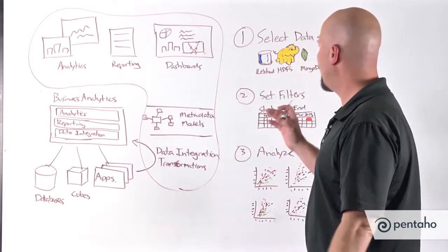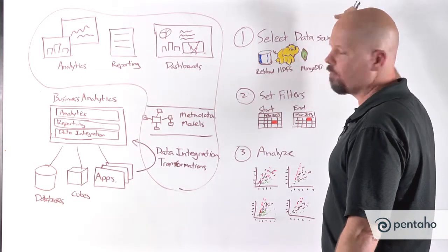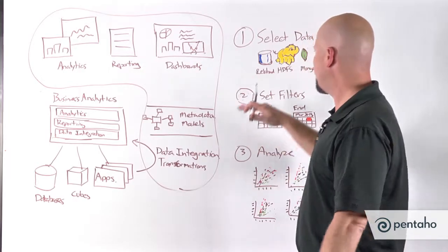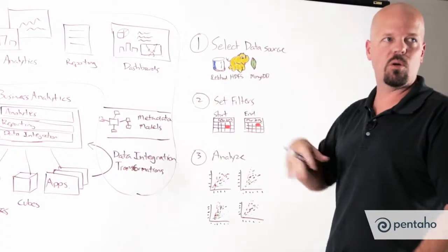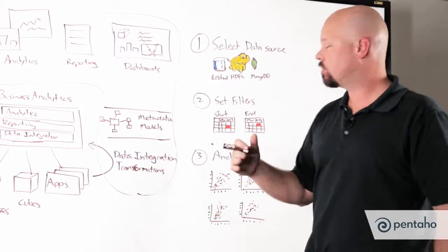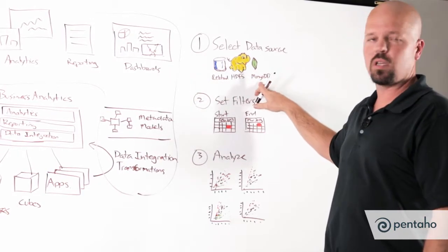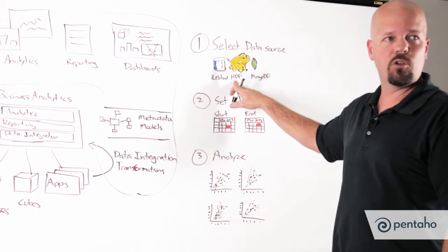And so really we boiled it down into three specific steps. And so the first step of InstaView is point at the data that you want to access. So that might be a traditional data source like relational. That might be a more sophisticated data source like a big data data source, maybe it's a NoSQL data source like MongoDB or data that's sitting inside of Hadoop.